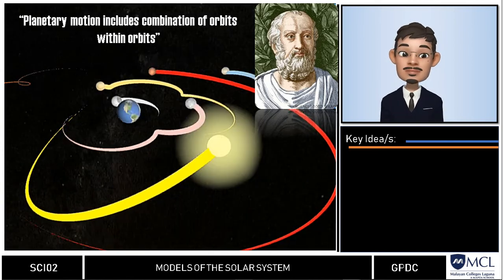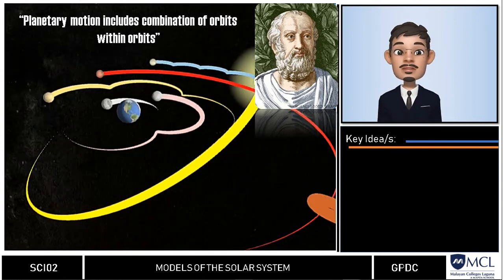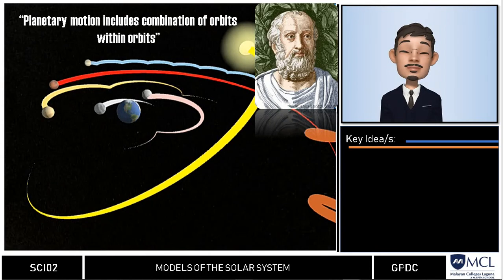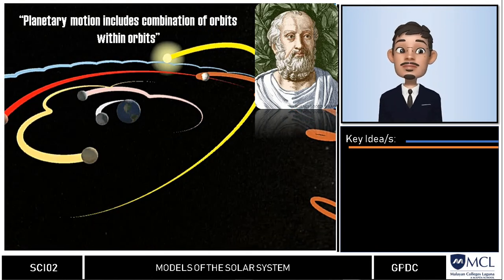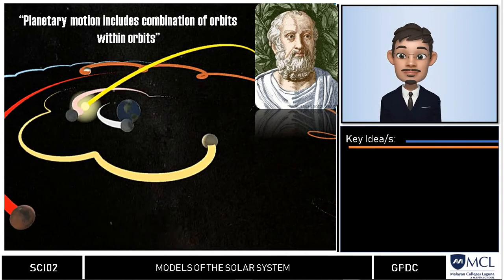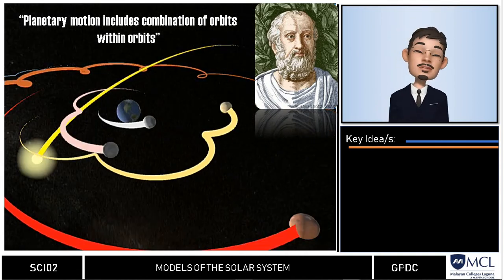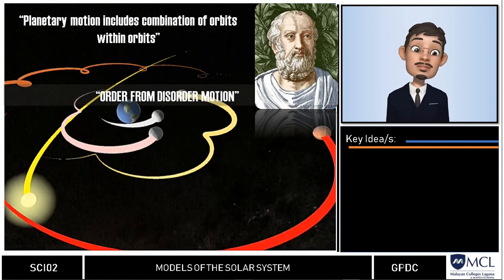Where the planets move in clockwise turn within one track. With this theory he believed that this could dissolve in the formation of regular geometrical models even if the planets seem to apparently behave irrationally. In simple statement, he thought of order from disorder motion of planets.